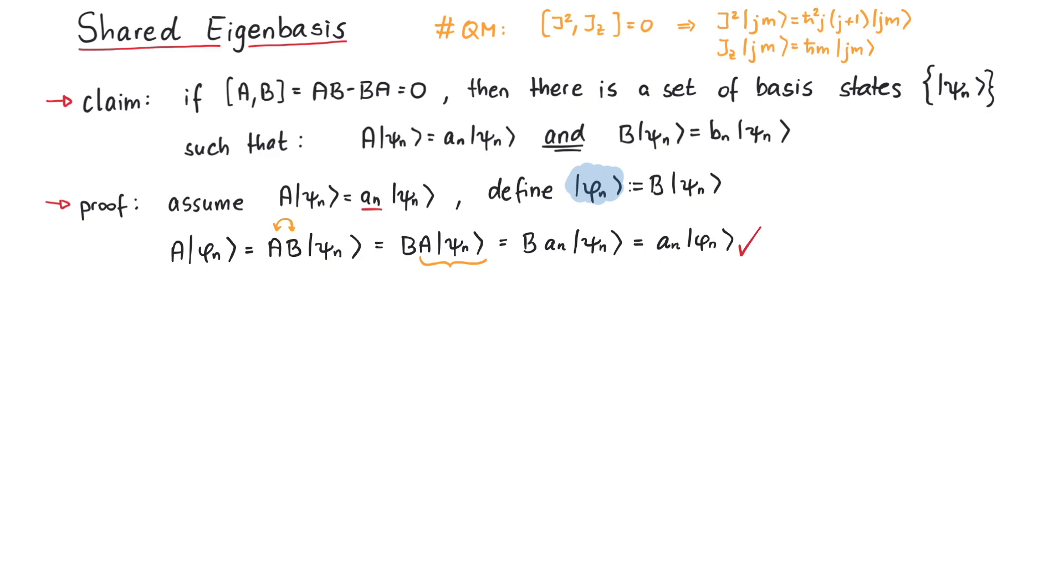Now, let us consider the following two cases. In the first scenario, the spectrum of A is non-degenerate. This means that all eigenvalues of A are different. Since phi_n and psi_n had the same eigenvalue of A, they must be proportional to each other.